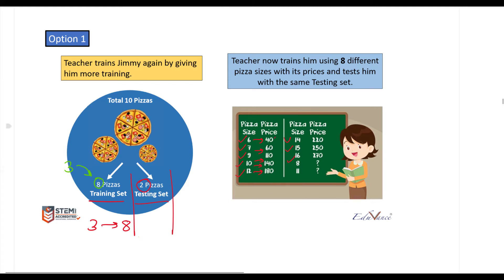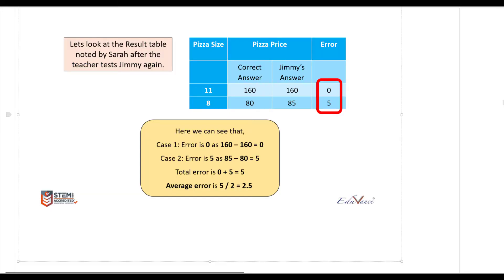She teaches him with six inches, seven inches, nine, ten, twelve, fourteen, fifteen, and sixteen inches, and Jimmy is taught the respective pizza prices for these sizes. Now with an increased dataset for training, let us see how Jimmy performs on the testing phase. Sara is noting down the responses that Jimmy is giving — for eleven inches, Jimmy's answer is 160 as before, and for eight inches his answer is 85.